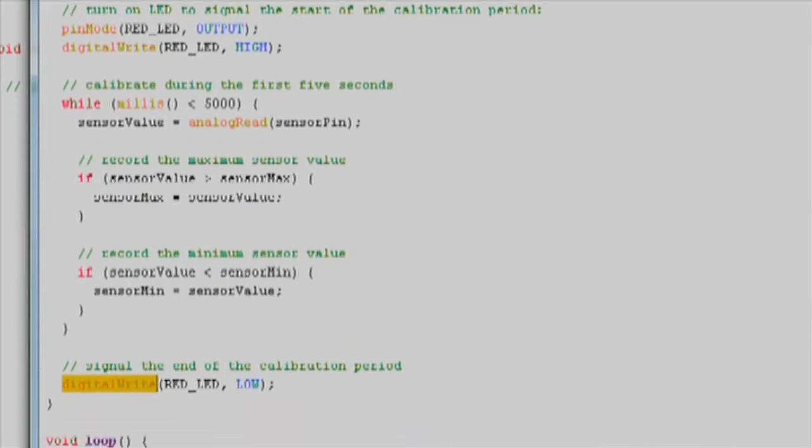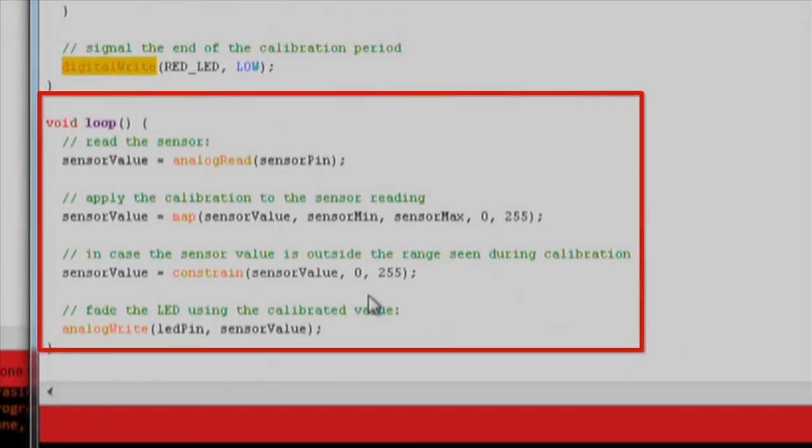Next, we jump to our loop section in our code. In the loop section, we read our instantaneous analog reading. Then we map this reading linearly between our expected min and max values to a value between 0 and 255.